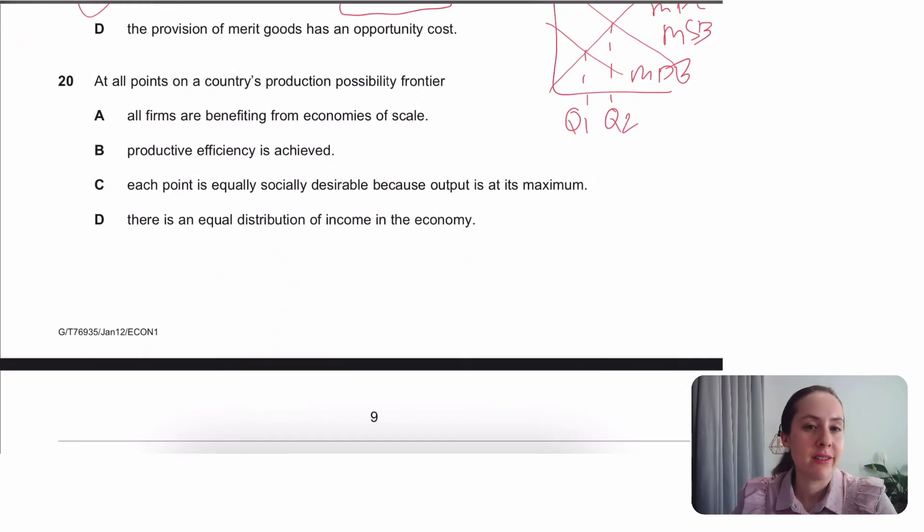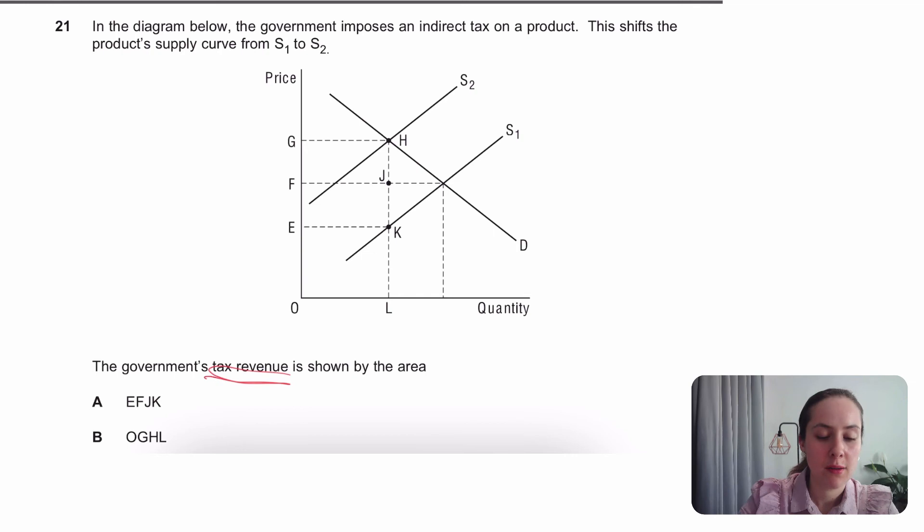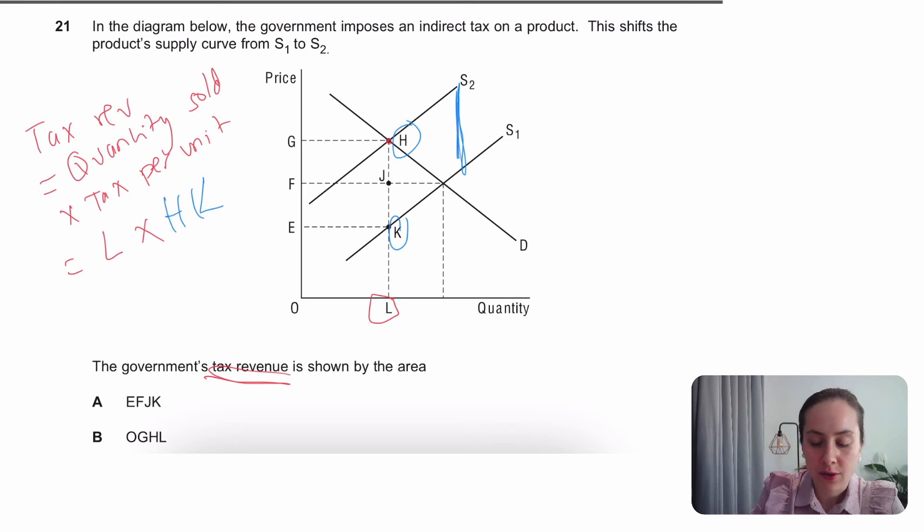All points on a PPF are productively efficient. So that one is the answer. Indirect tax. And we are asked for the tax revenue. By the way, to work out the tax revenue, it's really straightforward. All you need to do is work out the quantity sold and the tax that was applied to each one. So the tax per unit, I'm going to call it. To work out the quantity sold, it's with the tax applied. So that would be L. And the tax per unit, you can always find that as the distance between the supply curves. This is a parallel shift. So it doesn't really matter where you get the distance from. So for example, the distance between H and K would give me that distance there. And so we are going across all the units up to L. Because we've sold 0, 1, 2, 3, all the way to L. And each unit's been taxed that much. That gives me the tax revenue as EGHK.